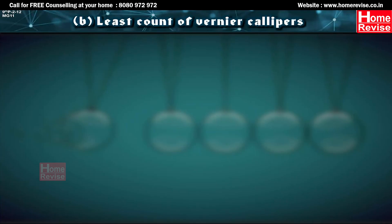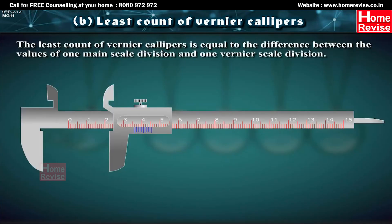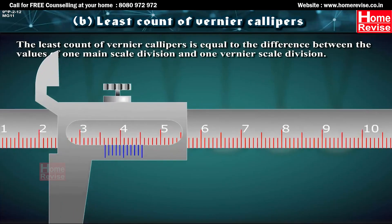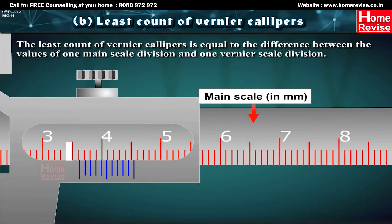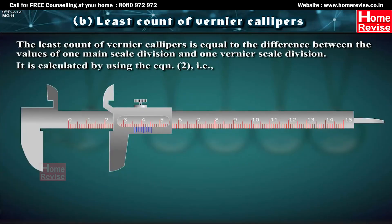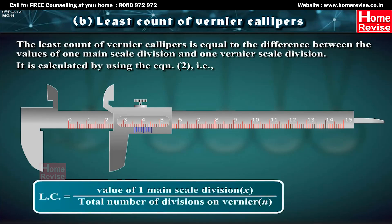The least count of Vernier Calipers equals the difference between one main scale division and one Vernier scale division. It is calculated as: LC = value of one main scale division (X) divided by total number of divisions on Vernier (N).